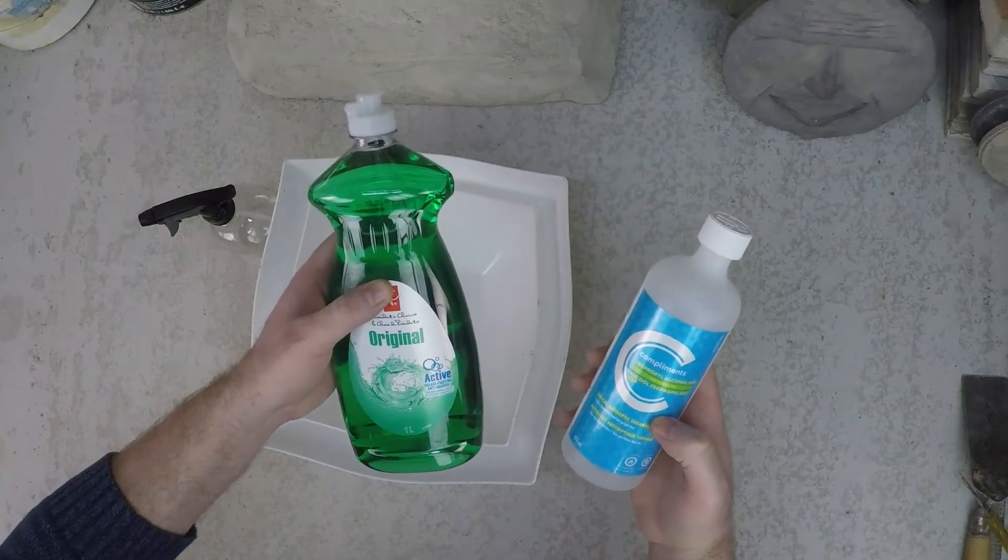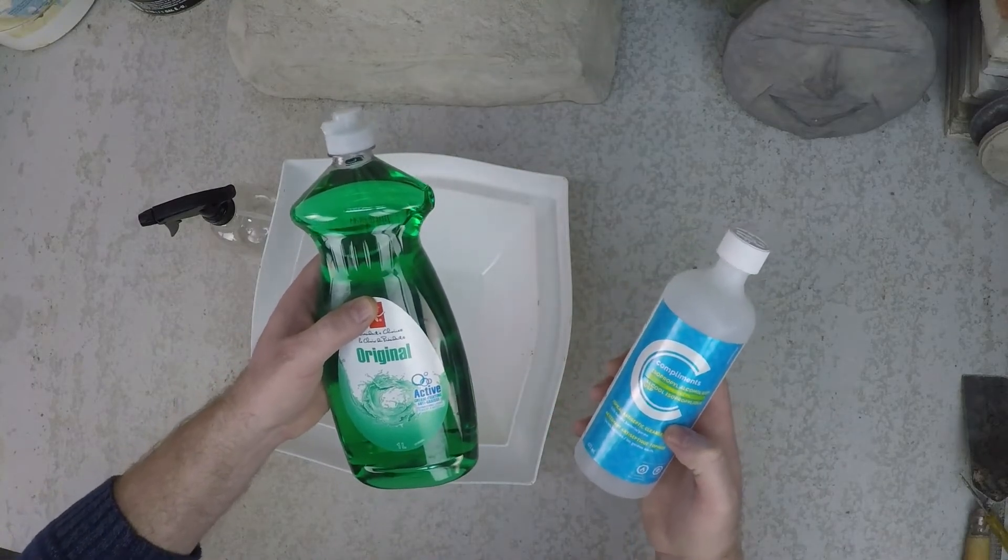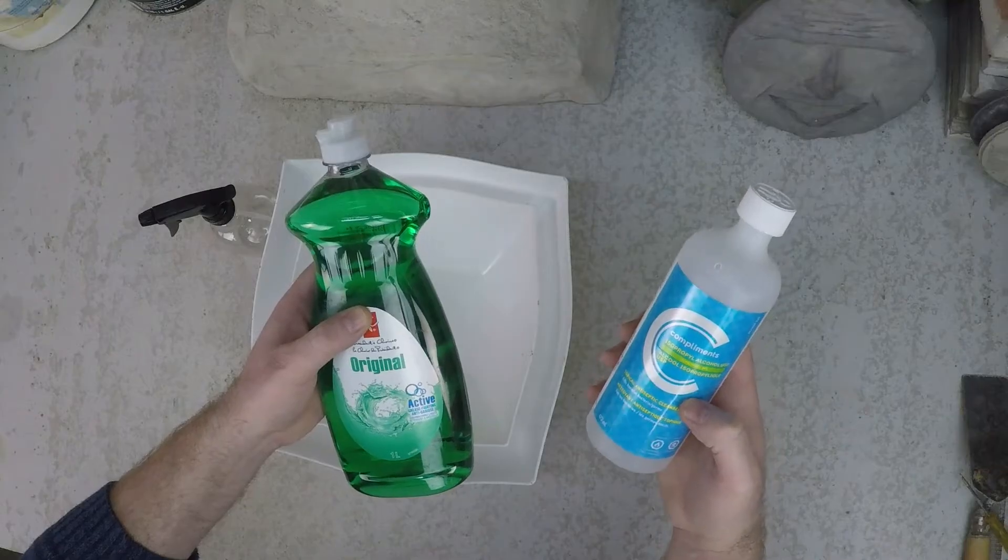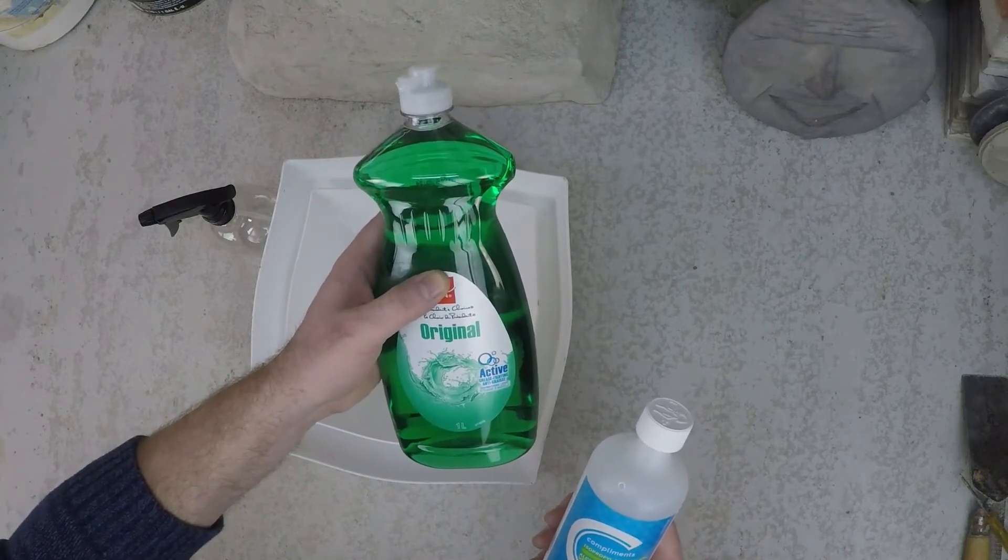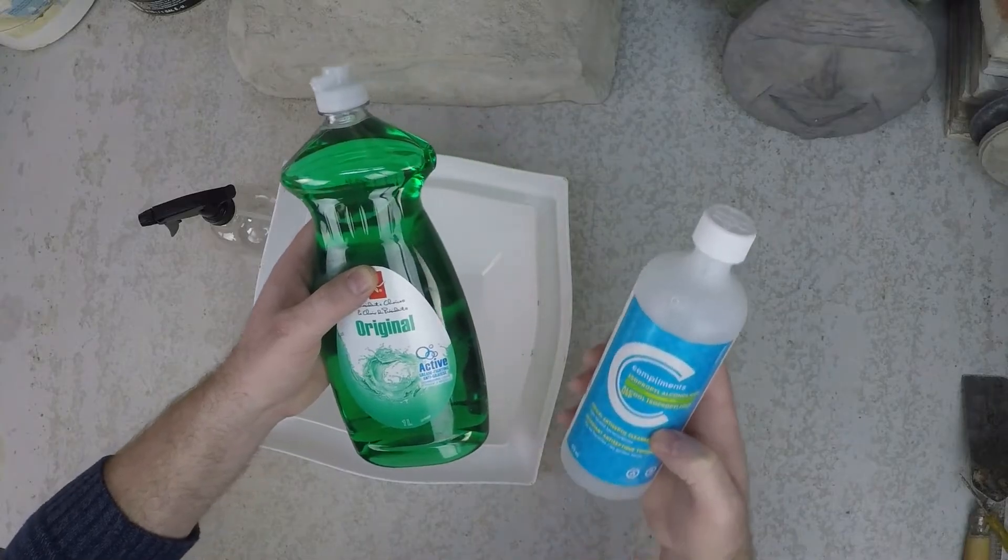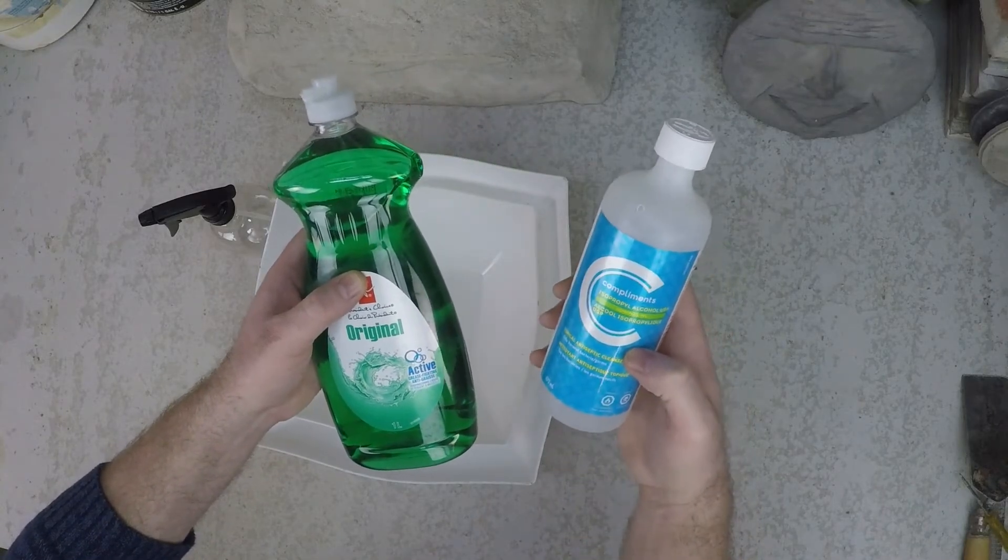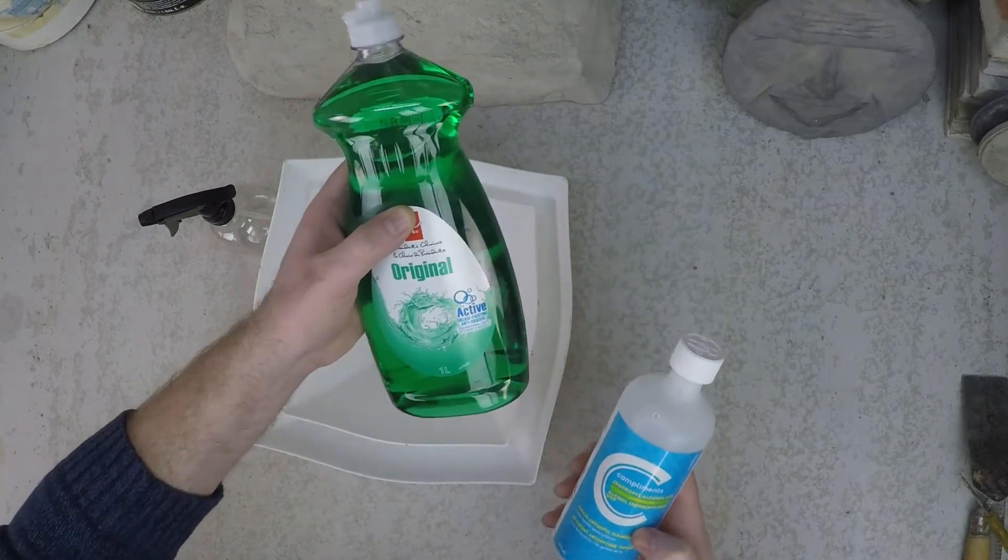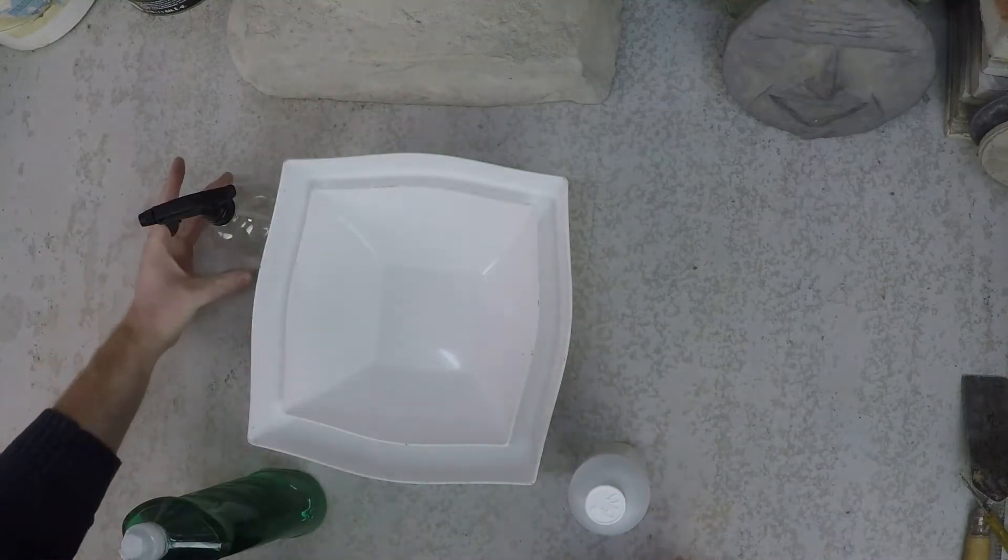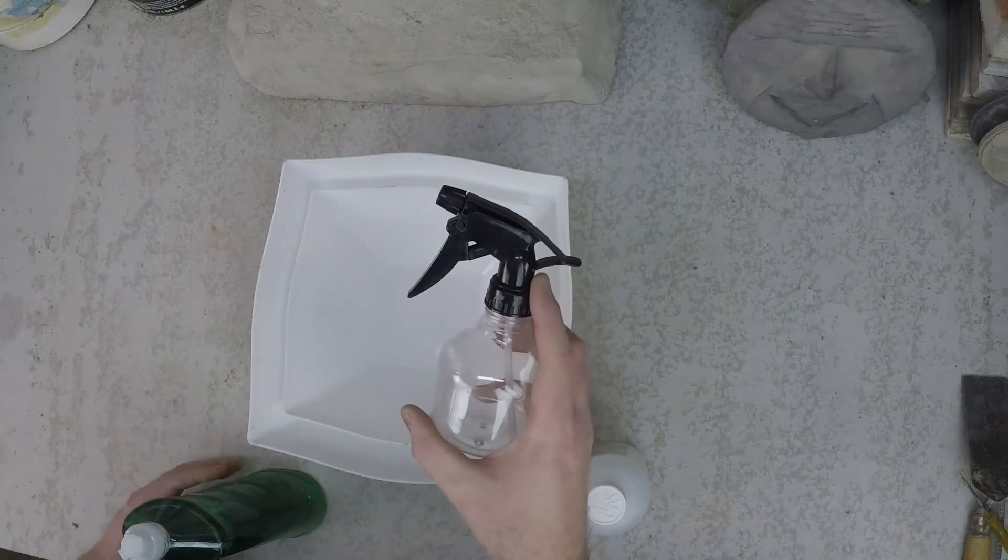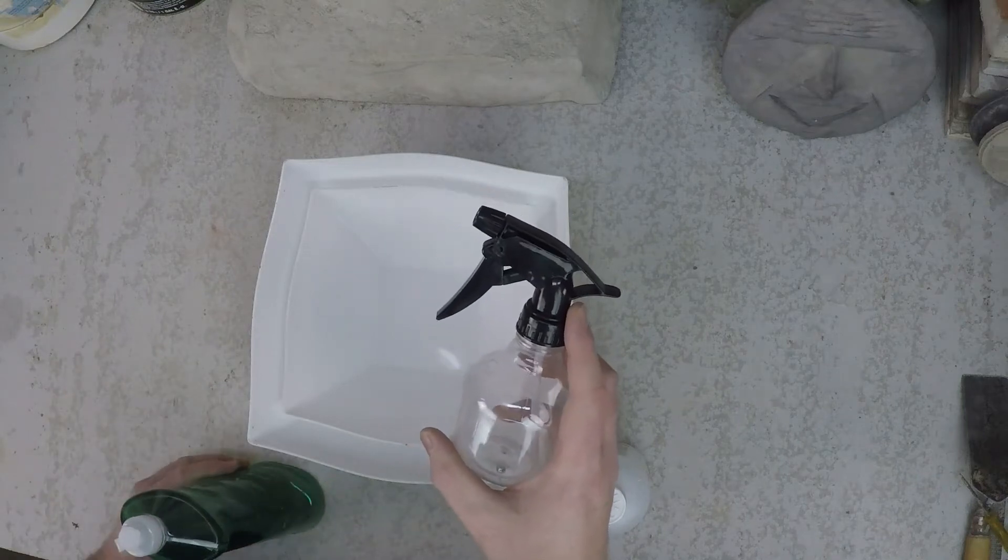Another at-home option for mold release spray or making your own mold release is 99% isopropyl alcohol mixed with a dishwashing liquid detergent of some kind. What you want to use is two parts isopropyl alcohol to one part dishwashing detergent. Mix them together in a spray bottle and then apply to your mold. Be sure to wipe off any excess.